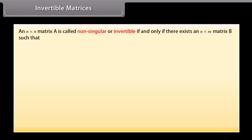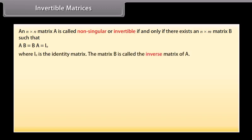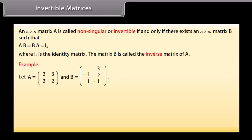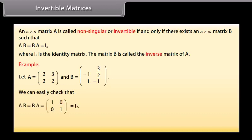Invertible matrices: An n×n matrix A is called non-singular or invertible if and only if there exists an n×n matrix B such that AB = BA = I_N, where I_N is the identity matrix. The matrix B is called the inverse matrix of A. Look at this example: here A and B are given. We can easily check that AB = BA = identity matrix. Hence A is invertible and B is its inverse.